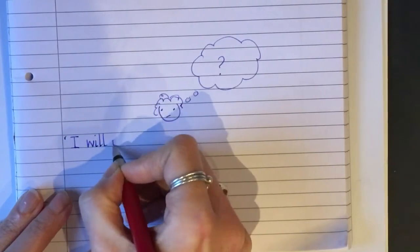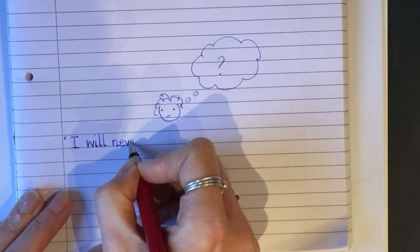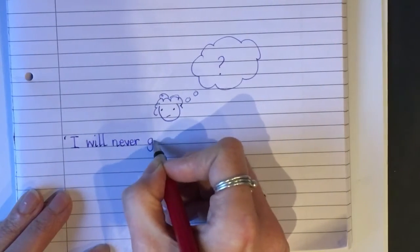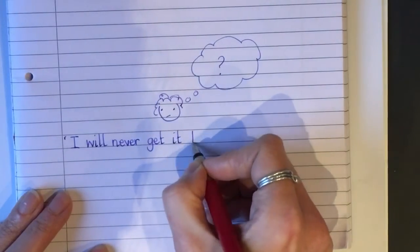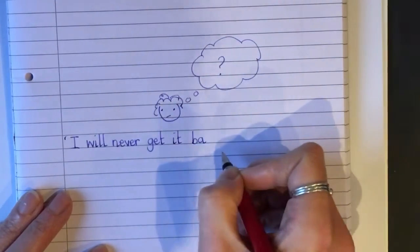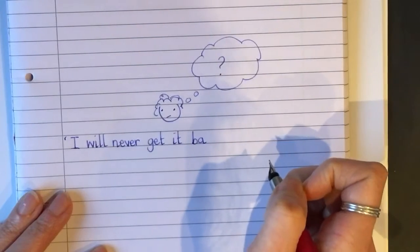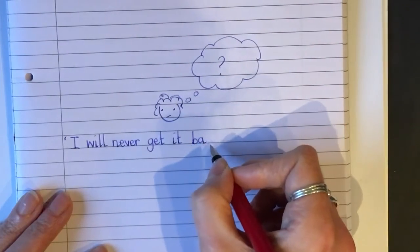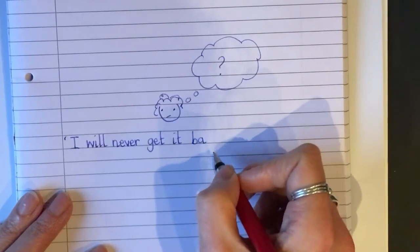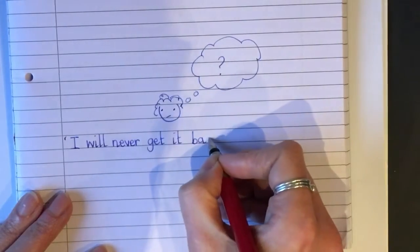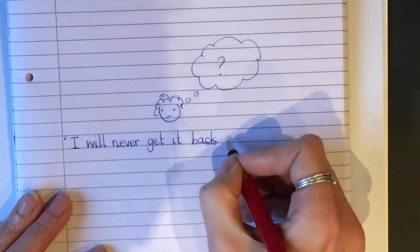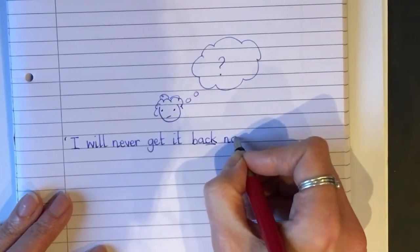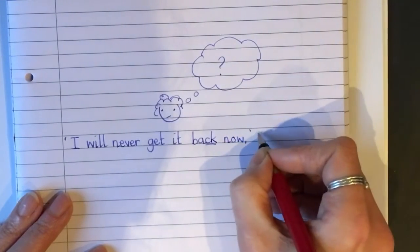Will never get it back. What kind of K do we need in back? Is it C or is it K or is it both? It's both, isn't it, like this? There we go. I will never get it back now, thought the Queen.